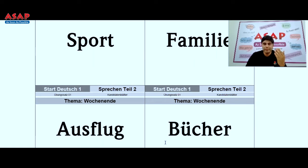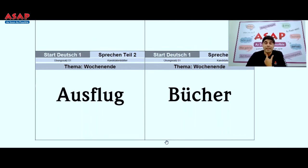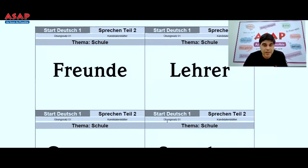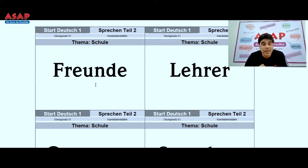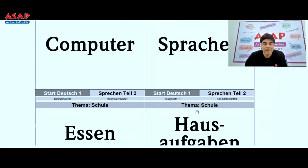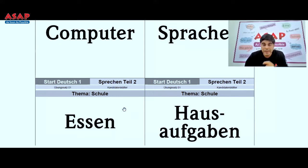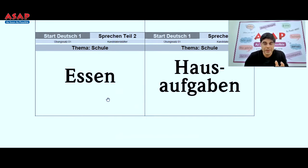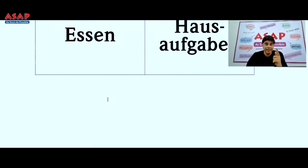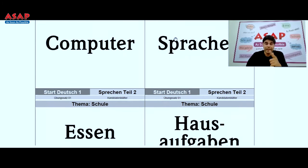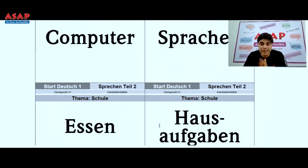Next card example: Thema is 'Schule,' and the word is 'Freunde.' One question you can frame here is 'Wie viele Freunde haben Sie in der Schule?' — How many friends do you have in school? Now try framing questions on the other words given: Lehrer, Computer, Sprachen, Essen, Hausaufgaben. Please don't ignore the theme — Thema is Schule, so pay attention to that. Write five questions in the comment box.